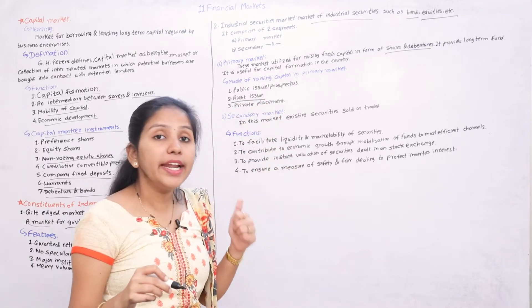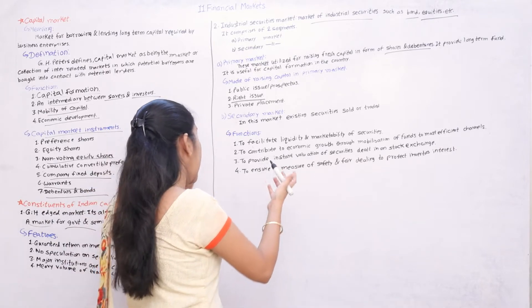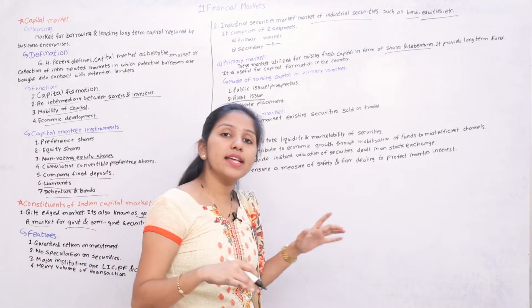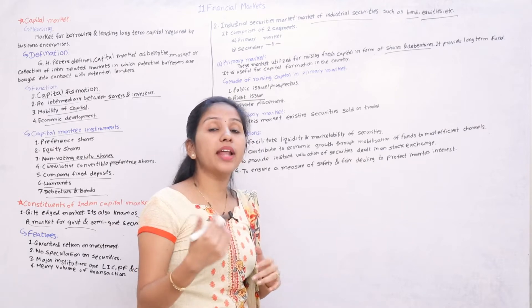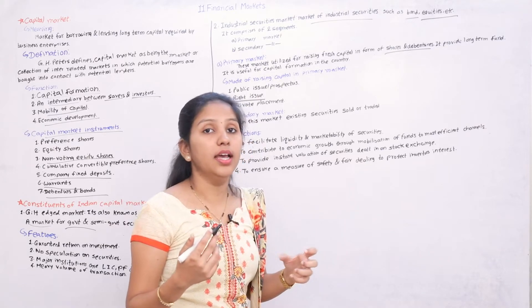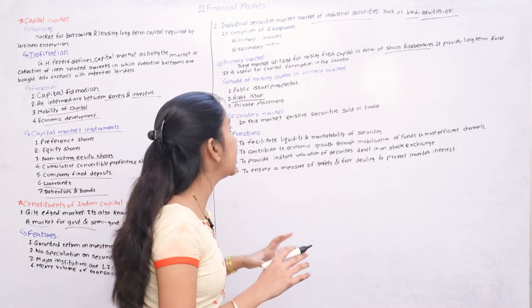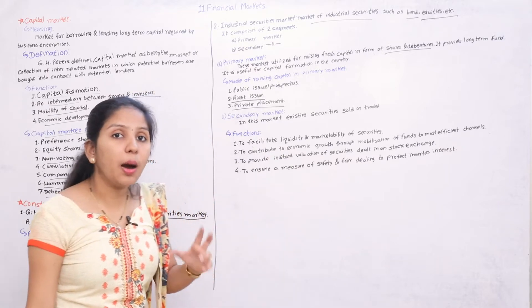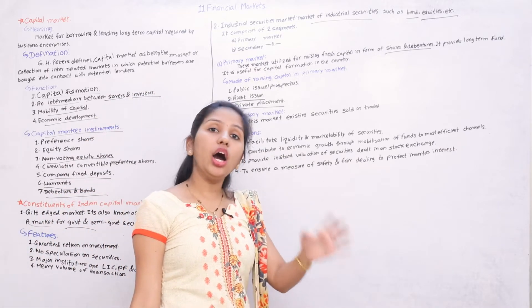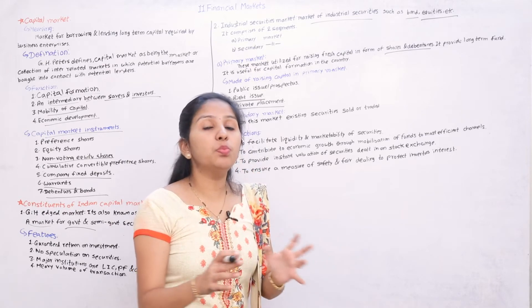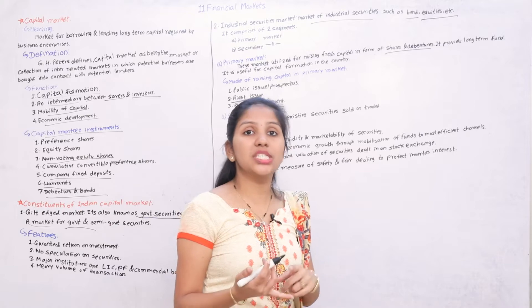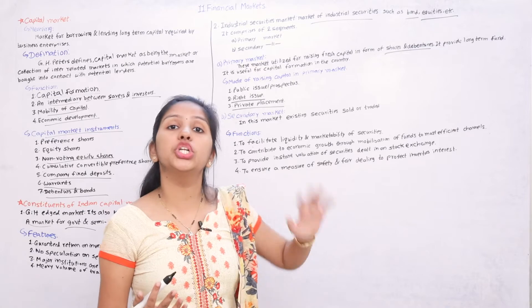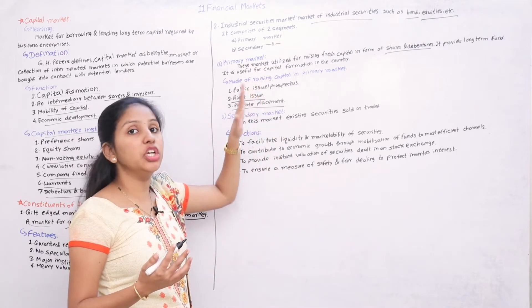The second mode is the rights issue. Rights issue means existing equity shareholders are given the right to subscribe to new shares, giving them more capability and control. The third mode is private placement — the company issues special shares, and these shares are given only to a selected group of people, namely securities holders, investors, and intermediaries. These are the three main groups to whom private placement shares are issued.